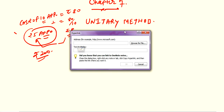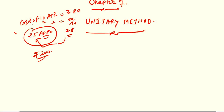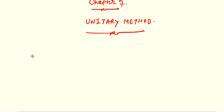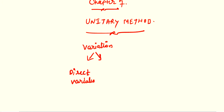Similarly, we are having unitary method again. But this time a new concept is there in your chapter, and that is variation. We have two types of variation: the first one is direct variation, and the second one is indirect variation, also known as inverse variation.